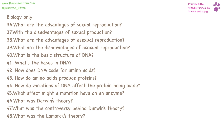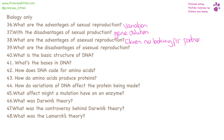Variation is the advantage to sexual reproduction. The disadvantage is that an organism is diluting its genes. The advantage of asexual reproduction is that you don't need to wait around to find a partner and you are producing clones of yourself. The disadvantage of asexual reproduction is the lack of variation.